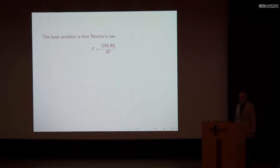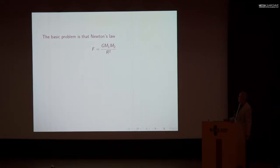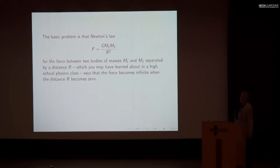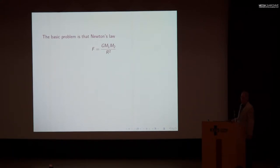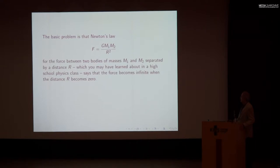The basic problem in the quantum theory of gravity is that Newton's force law — that the force between two masses separated by distance r becomes infinite when the distance becomes zero. Newton says the force law has this 1/r² dependence, so as r goes to zero the force diverges.